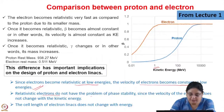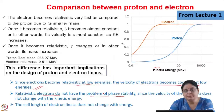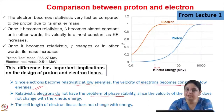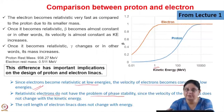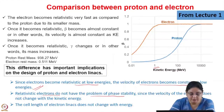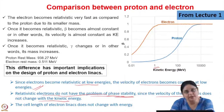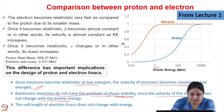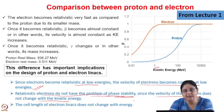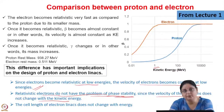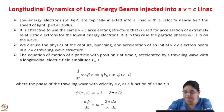Relativistic electrons do not have the problem of phase stability. The problem of phase stability arises because different particles see different values of the electric field and get different energies, causing different velocities. But for electrons which are already relativistic, even though the energy gain is different, they will still move with the same velocity. Since the velocity of the electron does not change with kinetic energy, the cell length of the electron linac does not change with energy — it is either beta*lambda or beta*lambda/2 depending on the mode structure.